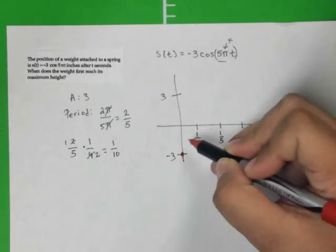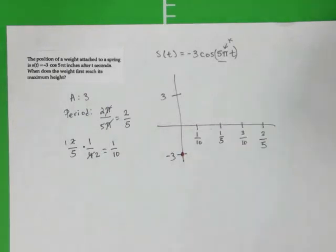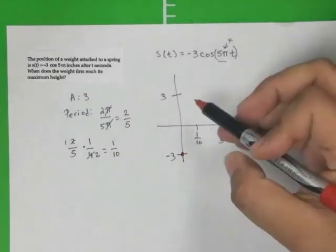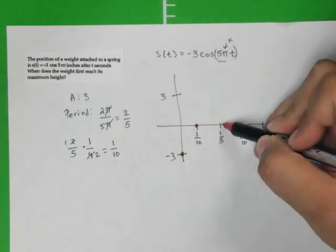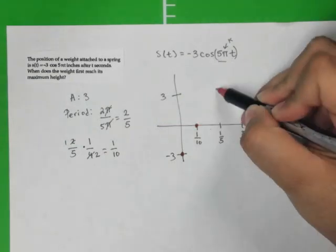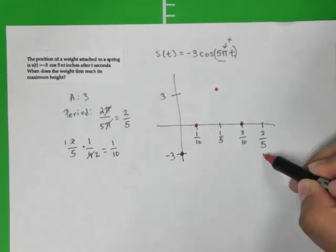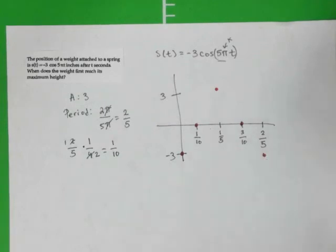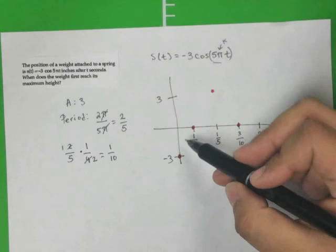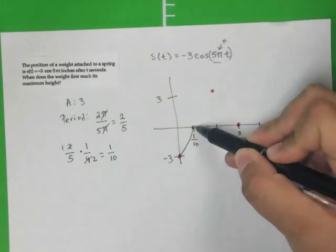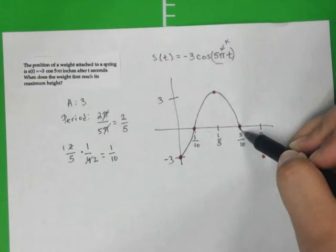So it follows the same pattern as the regular parent function cosine. So at 1 tenth, it'll hit 0. At 1 fifth time, it will reach its amplitude there. 3 tenths come back down to 0. And 2 fifths come back down to negative 3. So the graph will look something like this.